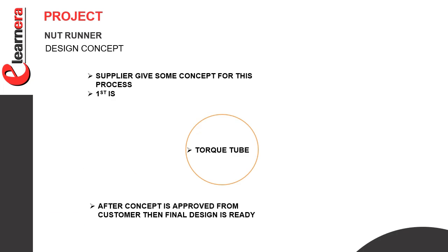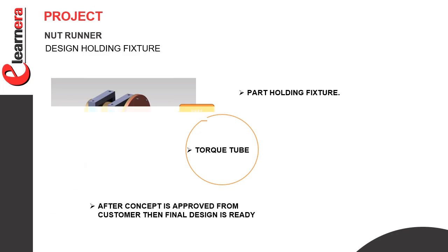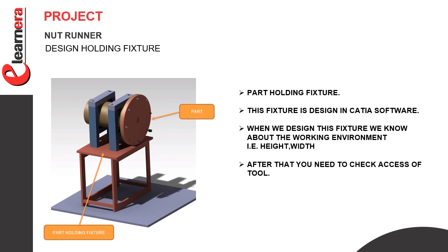In the design concept, the supplier makes a 3D design of the top tube and sends it to the customer. The customer checks the whole design to verify whether requirements are fulfilled. If requirements are fulfilled, the customer approves the concept. When the customer approves, the designer makes a final design. The image shows the part holding fixture — first we need the part holding fixture. On this part we apply the 3-2-1 principle. The part is properly rested, located, and clamped for performing the tightening operation.